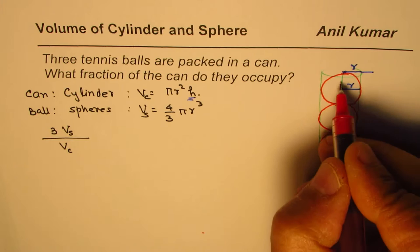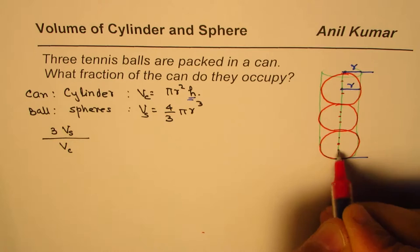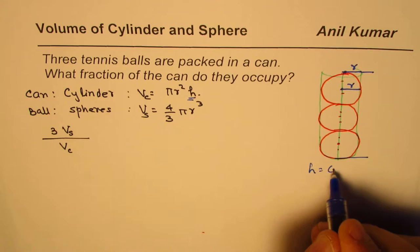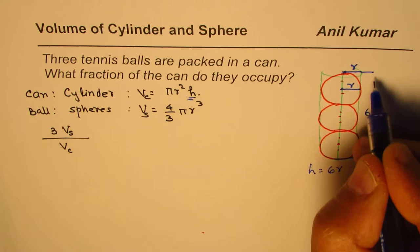If I want to calculate the height, then the height clearly is one, two, three, four, five, six radius. So height in this case can be written as six times the radius.